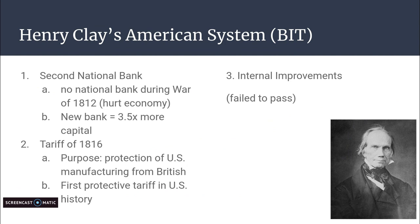So in 1816, Congress voted to pass a bill that would create a new bank. This bank was larger than even the first one — it had 3.5 times more capital, that is money, than the first bank.